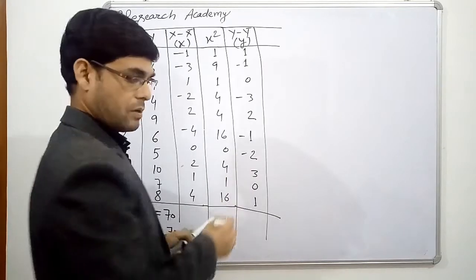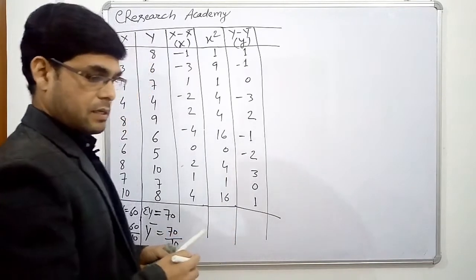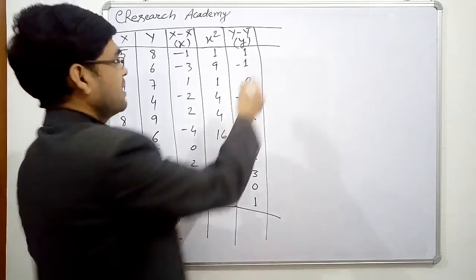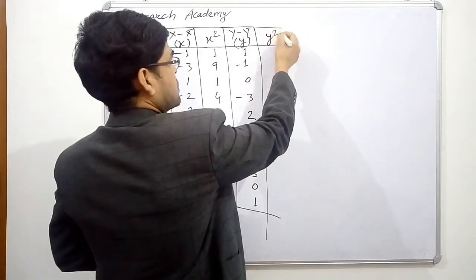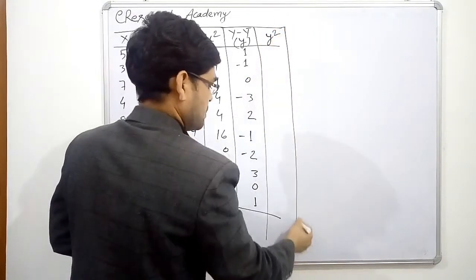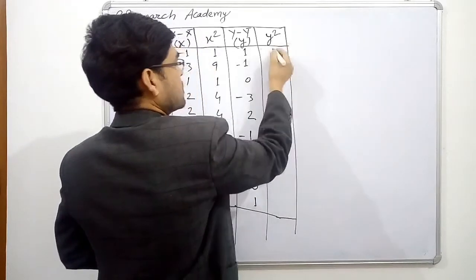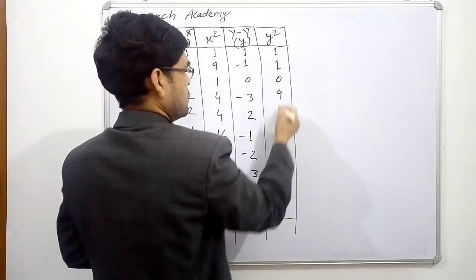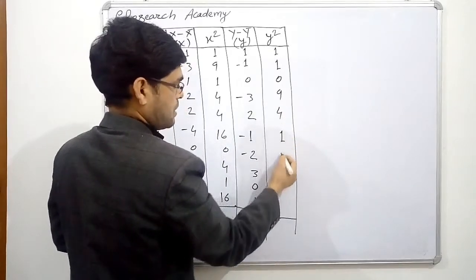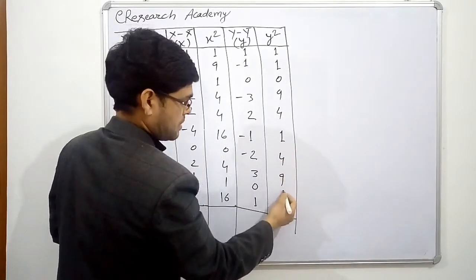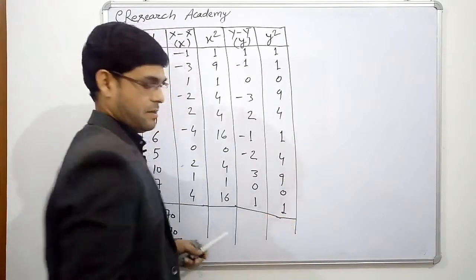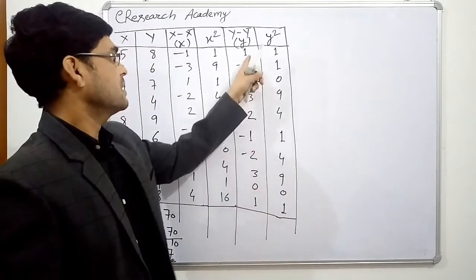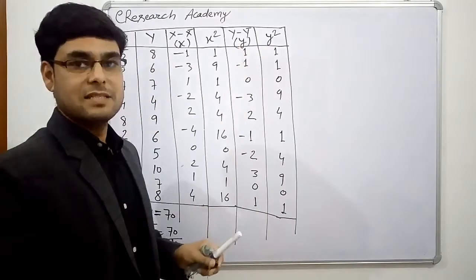Next we need y², the square of the deviations in the Y series. So: 1, 1, 0, 9, 4, 1, 4, 9, 0, and 1. These are the squared values of the deviations in the Y series.